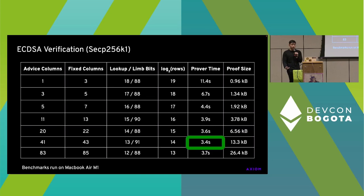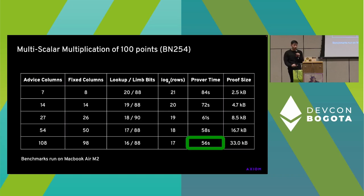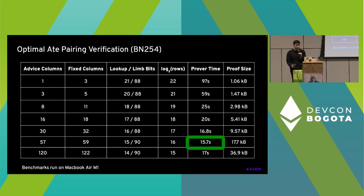Let me show you some numbers. For ECDSA signature verification, if we have a small proof size at the top, we have a longer proving time around 10 seconds. And if we increase the proof size, we're able to get things down to around 3 seconds on a MacBook Air. Weirdly, we found that on the CPU the MacBook Air beats a fancy AWS box. For multiscalar multiplication with 100 base points, we can get things to around 56 seconds using larger proof size, which is still an improvement over the small proof size setting. And finally, for pairing check on BN254, which is the curve on Ethereum, we can do that in about 15 seconds, again on the MacBook Air.